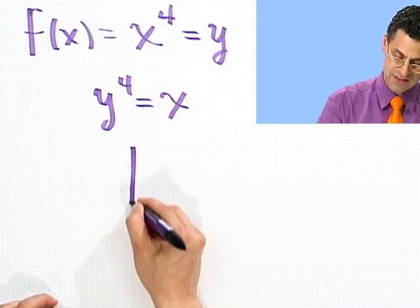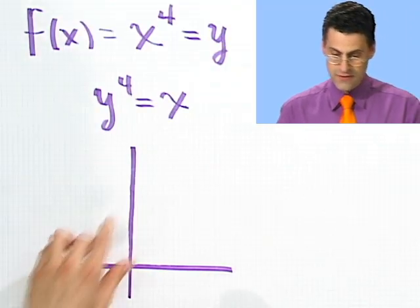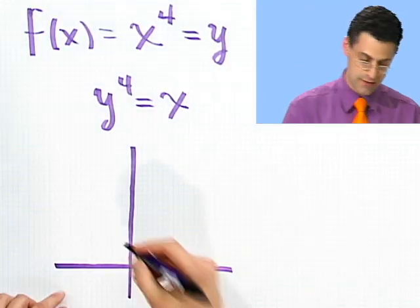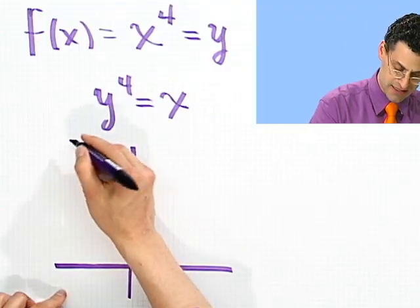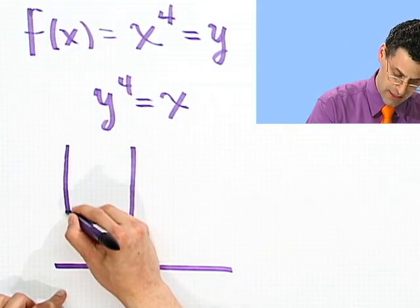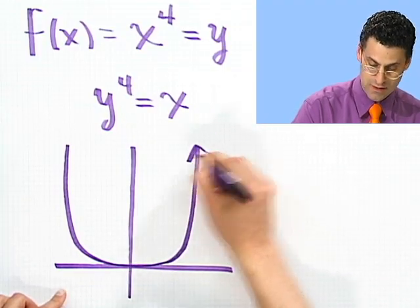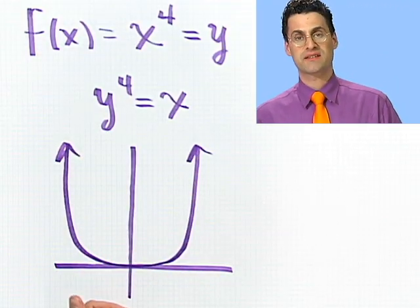Another way of seeing that is just to think of the graph of this. The graph of y = x^4 is very much like a parabola. It's a little bit exaggerated. So instead of being nice and smooth, it's still smooth, but it has a little bit more extreme features.